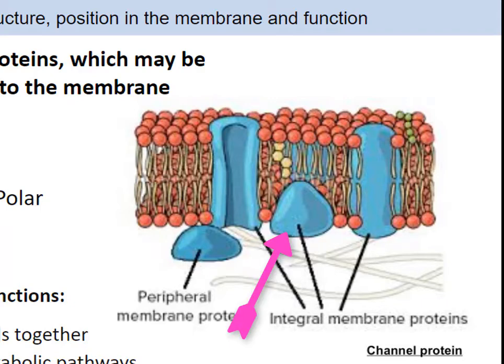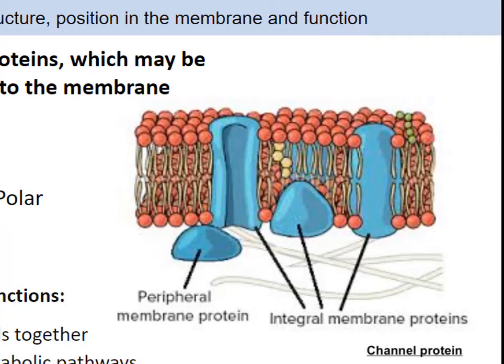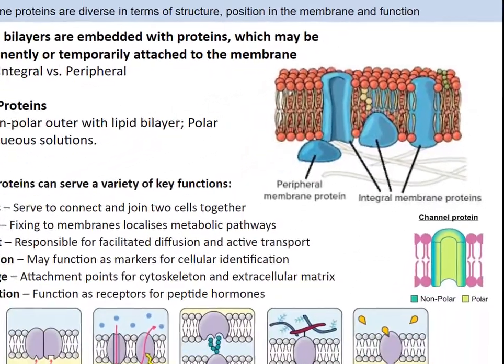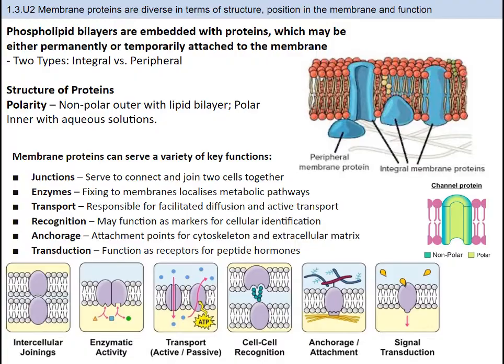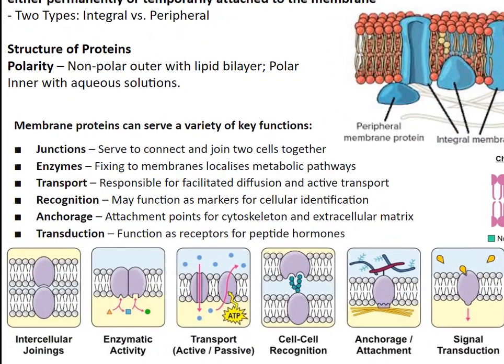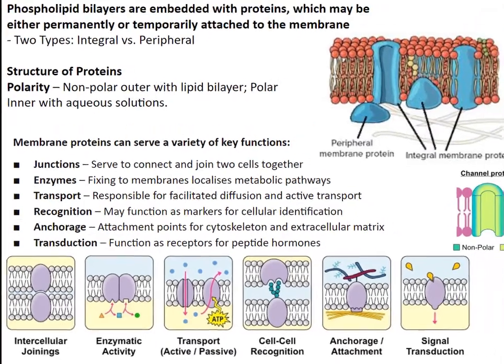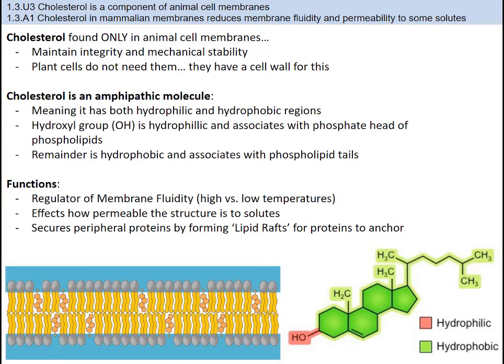Integral proteins have large sections embedded in the hydrophobic middle of the membrane. Other integral proteins are transmembrane, meaning they cross the entire membrane, providing a potential path from the inside to the outside of the cell. For these proteins, it is important that they have non-polar outer layers and polar middle layers. Peripheral proteins sit on the surface or have small sections that dip into the bilayer. Both types have functions including communication via receptor proteins, transporting molecules, anchoring cells, recognition proteins, and catalyzing reactions as enzymes.